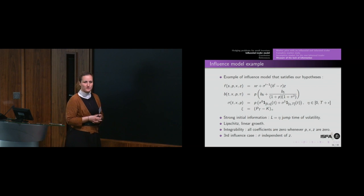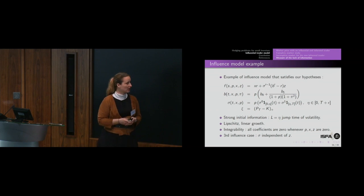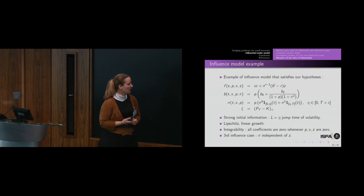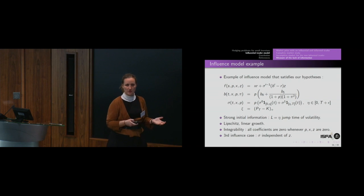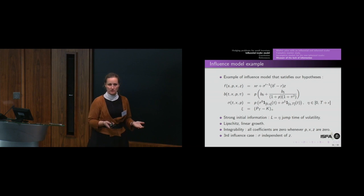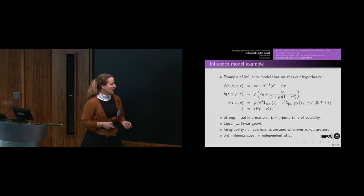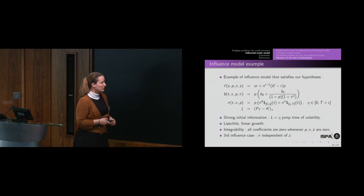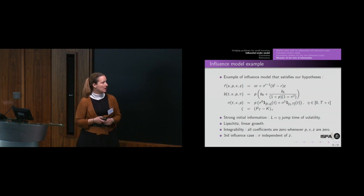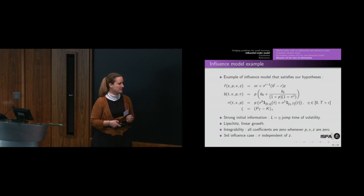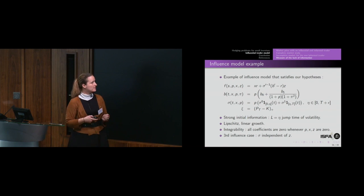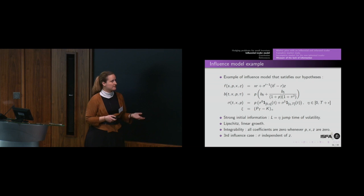An example fitting all hypotheses is one where you have strong initial information: a volatility that may jump, and your information is knowing when it will jump. Otherwise, you only observe the market. This fits Lipschitz and linear growth and integrability conditions. We are in the third influence case because the volatility is independent of the portfolio. Only the drift can be influenced by price and strategy. So you have an influence model satisfying all our hypotheses.